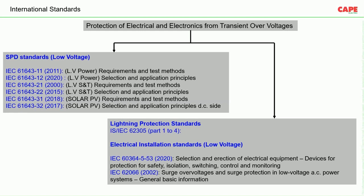Apart from that, SPD is also an integral part of the lightning protection system — it is also called the internal lightning protection system. IEC 62305 also discusses this. Additionally, IEC 60364 Part 5-53 discusses how to install an SPD in an electrical system — that is, how to use SPDs in electrical wiring safely.